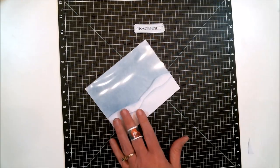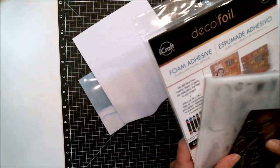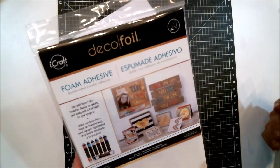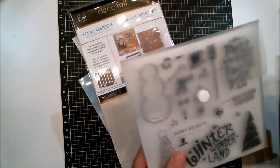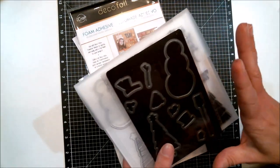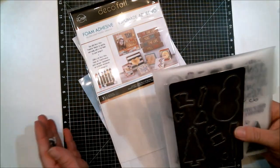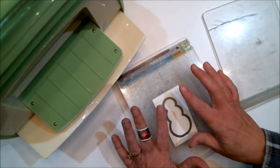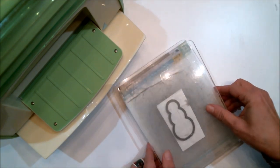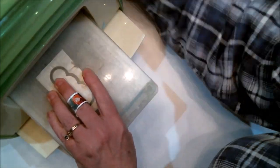So the next thing I'm going to be doing is cutting out a snowman, and I'm going to be using the white flock sheet. I'm going to be using the adhesive foam, or foam adhesive, from Deco Foil, because I want to give the snowman a little dimension, and I'm going to be using the stamp and die set that is from Close To My Heart. It's old, they don't have it anymore, so I can't tell you where to get it, but I'm going to be using this die.